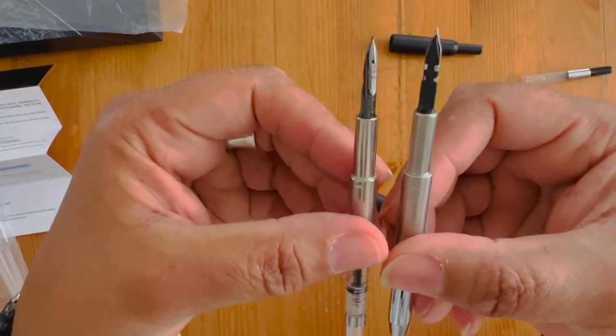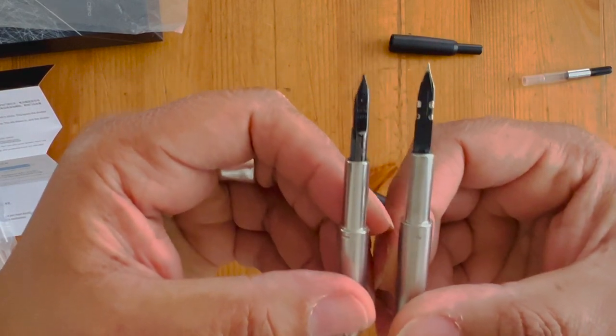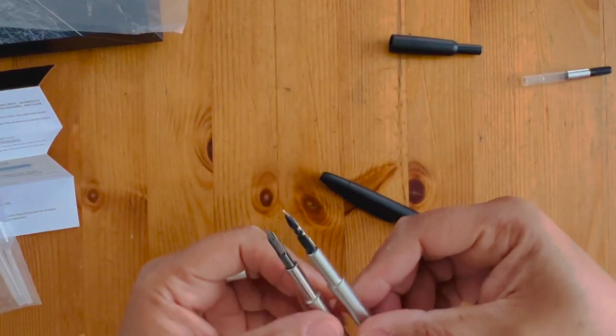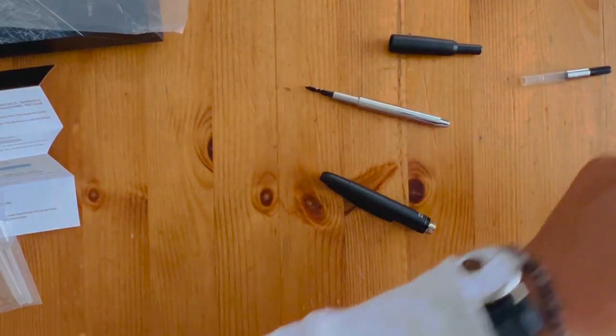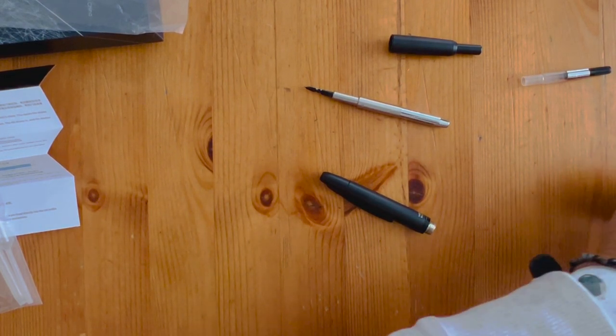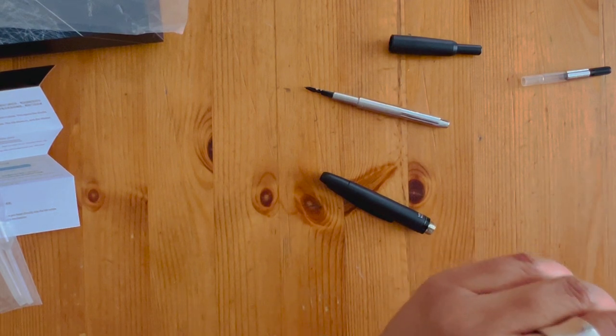So Pilot Vanishing Point on the left-hand side, the Majohn A1 on the right. Pretty much identical. This one's already situated. The Majohn for me is situated onto the converter.